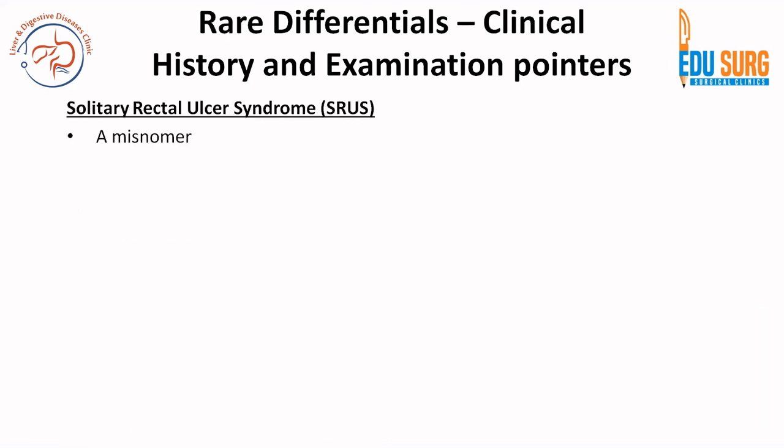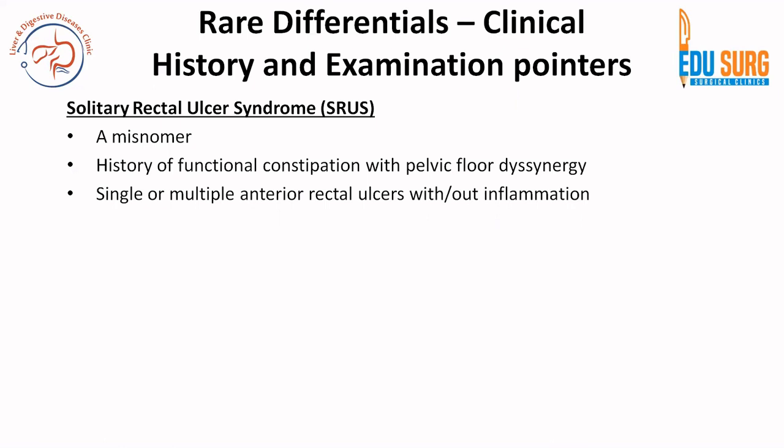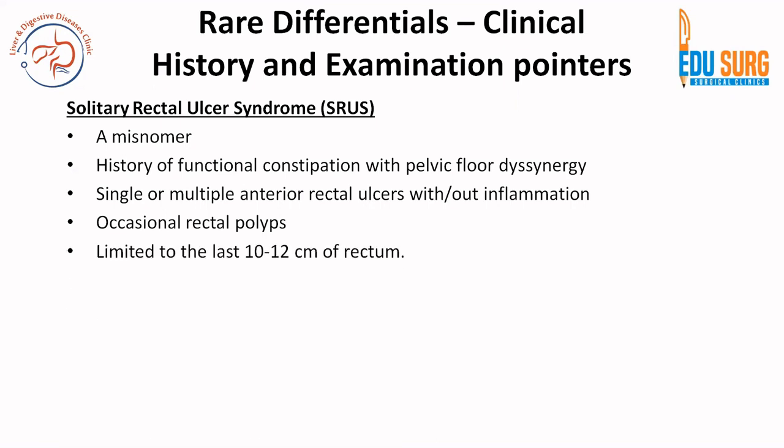Coming to rare differentials: Solitary Rectal Ulcer Syndrome (SRUS) is actually a misnomer representing functional constipation with pelvic floor dyssynergy. It can present as single or multiple anterior rectal ulcers with or without inflammation — all these are MCQ points. Patients can also have rectal polyps. SRUS is limited to the last 10 to 12 centimeters of rectum, and it is more a manifestation of pelvic floor dyssynergy. Patients usually have a long-standing history of functional constipation, which is how you differentiate SRUS from IBD.